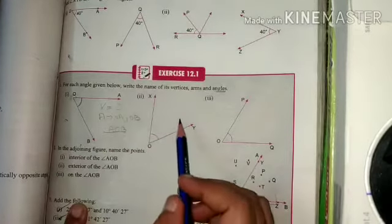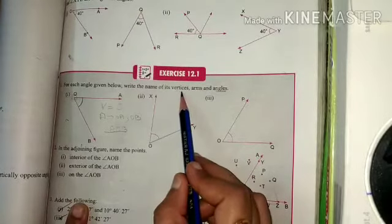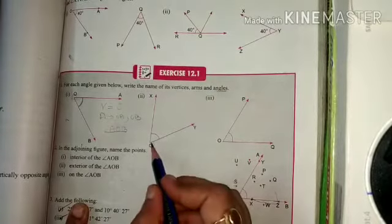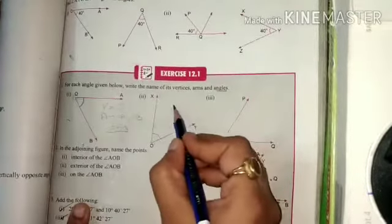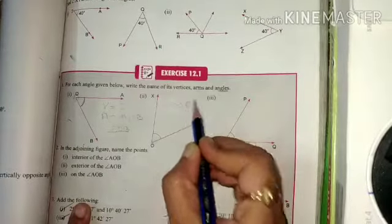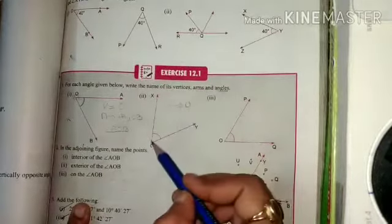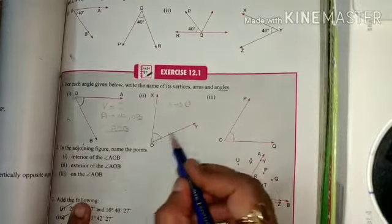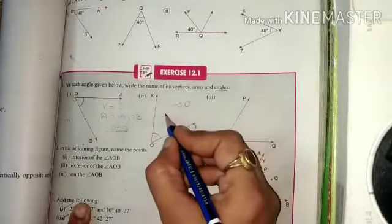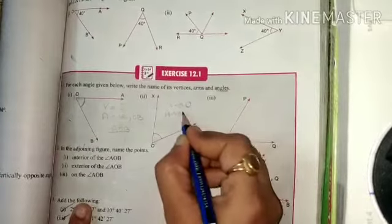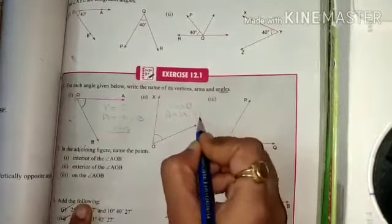Now in the second case, vertices, arms, and angles. First of all, vertex is at point O and arms are OX and OY. These are the two arms. Arms are OX and OY.